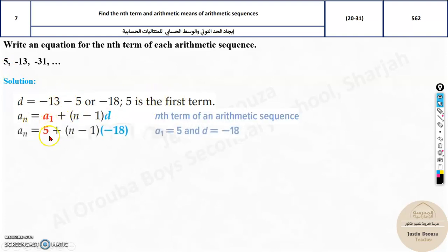The first term, 5, and the d value that is negative 18. Now, over here, all you need to do is substitute and simplify. That is 5. And over here, you keep on multiplying. And this is distributive property.